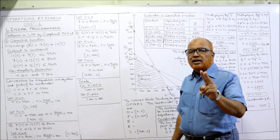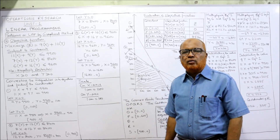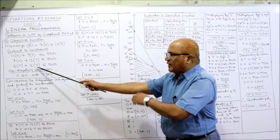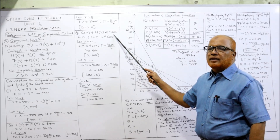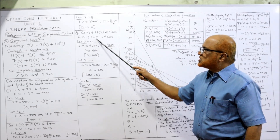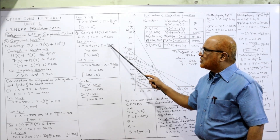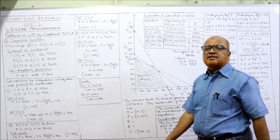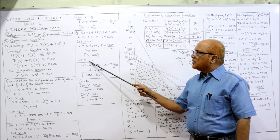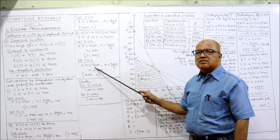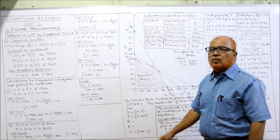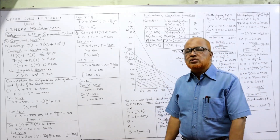Now the third inequality 6x plus 16y ≤ 9600 converts to 6x plus 16y = 9600. When x = 0, then 16y = 9600, so y = 600. Coordinates: (0, 600). When y = 0, then 6x = 9600, so x = 1600. Coordinates: (1600, 0). We have now calculated all the coordinates for all three inequalities.